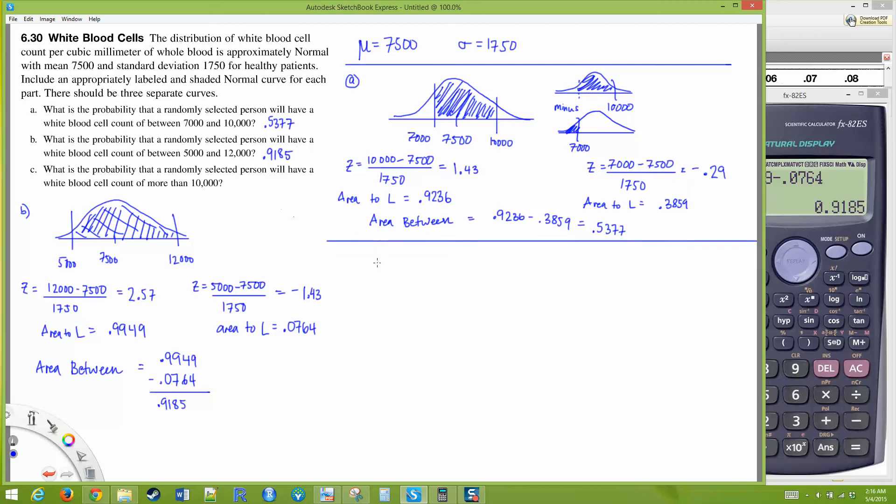Lastly, it asks what's the probability that a randomly selected person will have a white blood cell count of more than 10,000?